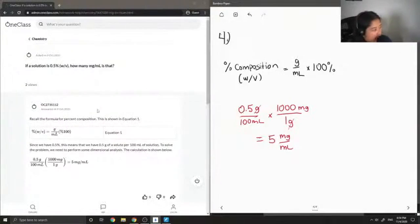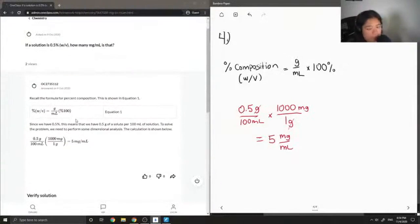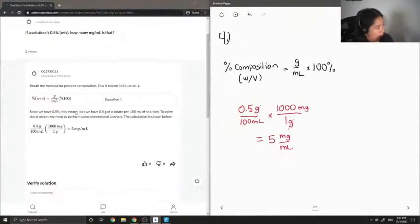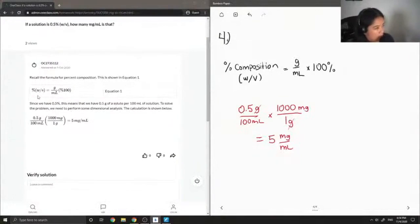So let's see what our junior tutor said. Recall the formula for percent composition. This is shown in equation one. So this is the same formula I have. Where percent of weight over volume is equal to grams per mill times 100%. Since we have 0.5%, this means that we have 0.5 grams of a solute per 100 milliliters of solution.